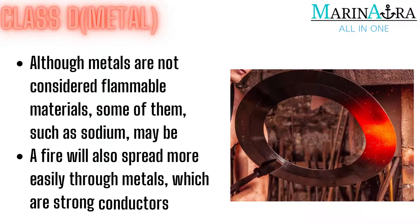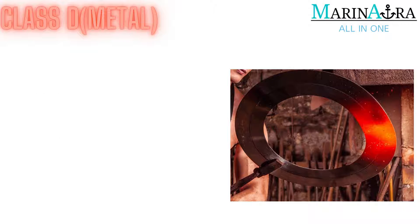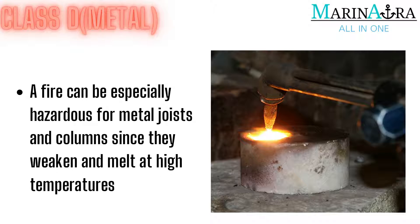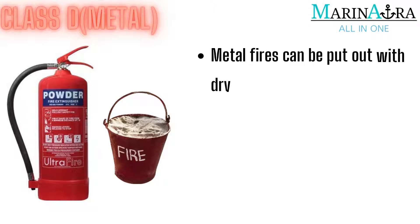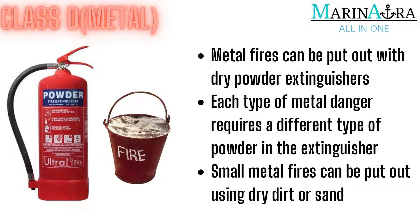Class D — Metal. Metals are not commonly thought of as flammable materials; however, some metals, such as sodium, may be. Metals are also strong conductors, which aid in the propagation of a fire. At high temperatures, all metals weaken and melt, which may be a major issue when metal joists and columns are used as structural parts in a fire. Water may actually function as an accelerant in metal fires, so how would you handle one? Metal fires can be put out with dry powder extinguishers. Depending on the type of metal involved, the powder within the extinguisher may differ. Dry dirt or sand can be used to suppress small metal fires.